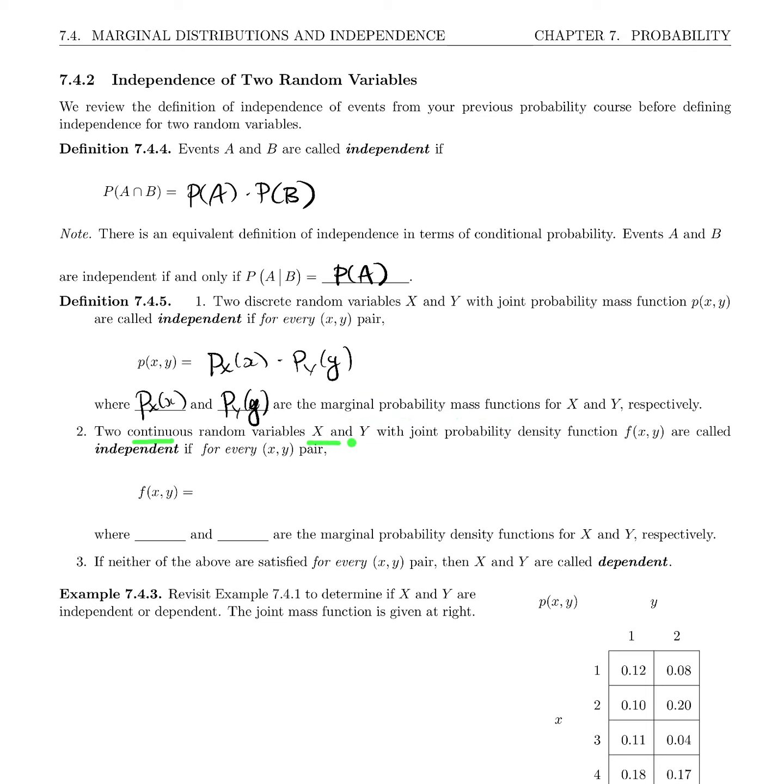Two continuous random variables X and Y with joint probability density function f(x,y) are called independent if for every (x,y) pair, f(x,y) equals f_X(x) times f_Y(y), where again these are the marginals. So f_X(x) and f_Y(y) are the marginal probability density functions now, because we've got continuous variables for X and Y respectively. And if neither of the above are satisfied for every (x,y) pair, then X and Y are called dependent.